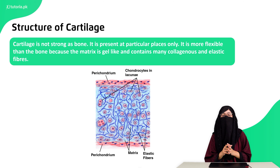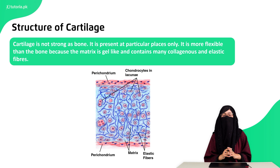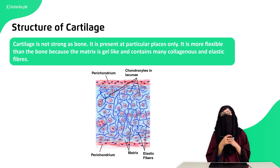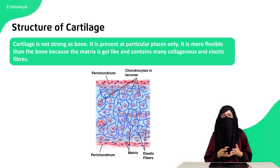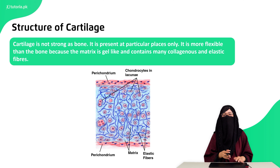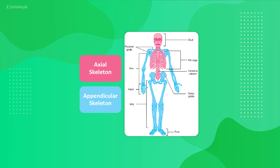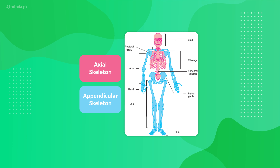Then we talk about cartilage. If bones are living tissue, then cartilage is more flexible — it is attached to bones so that it can help in movement. Our external nose and external ear also have cartilage. After that, the skeleton is divided into two categories: one is the axial skeleton, which is the main skeleton — it includes the rib cage, vertebral column, and skull. The other is the appendicular skeleton, which consists of appendages attached to your main skeleton.